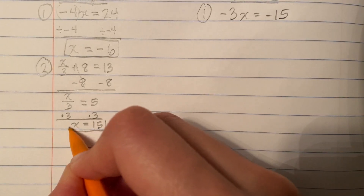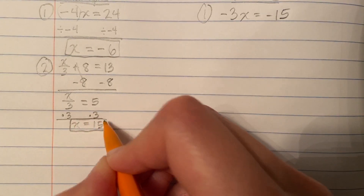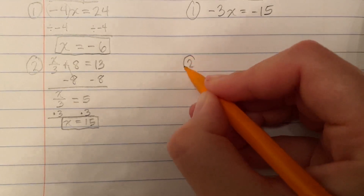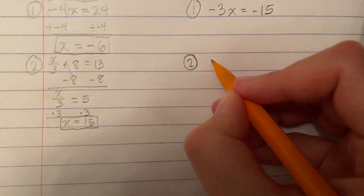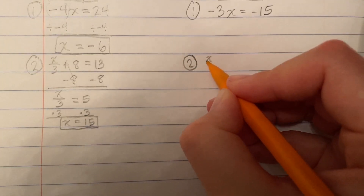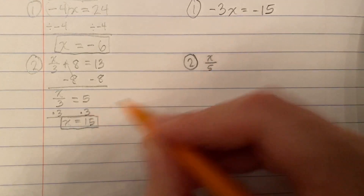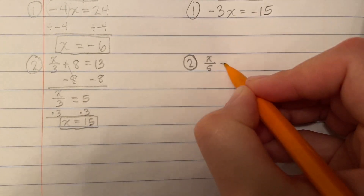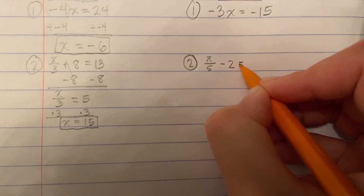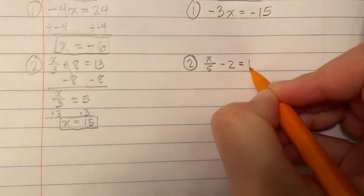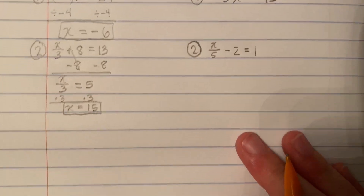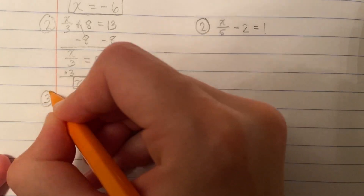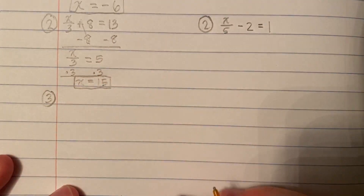That gives X equals 15. Here is practice problem number two. I'm squeezing the work in a little bit to use one less line — I'm using a composition book so my pages are small. Equations take up a few lines to solve.